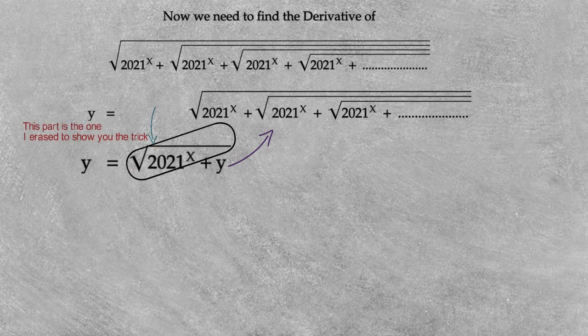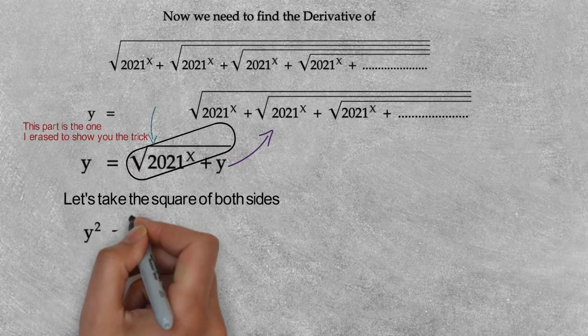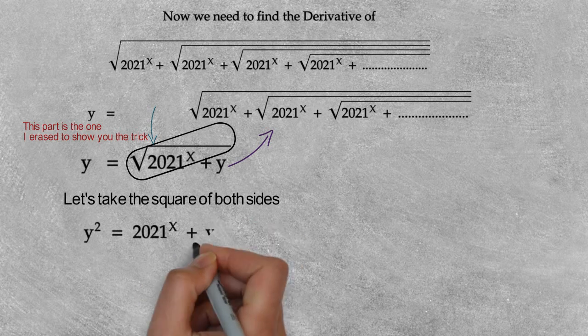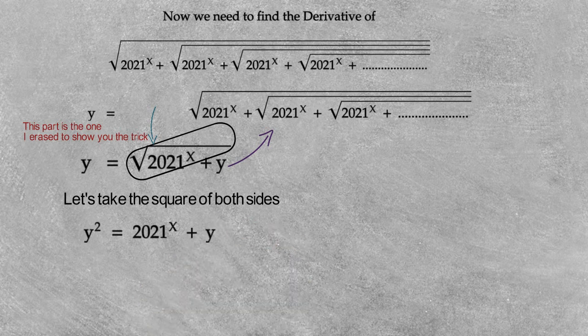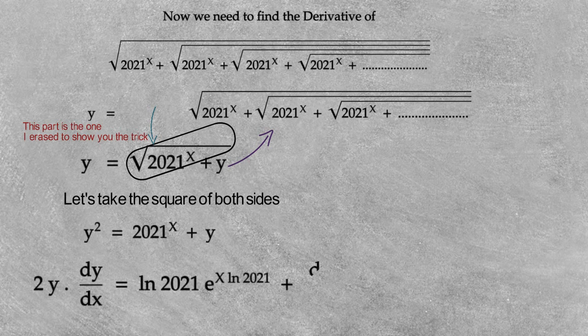Let's take the square of both sides: 2021 to the x power plus y equals y squared. Now let's differentiate this. We previously found the derivative of 2021 to the x power, so: 2y times dy/dx equals ln(2021) times e to the x·ln(2021) power, plus dy/dx.